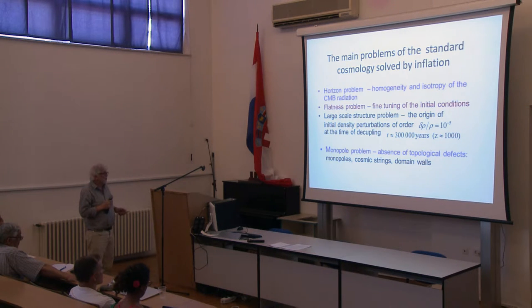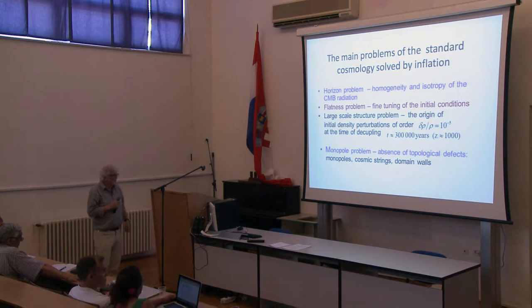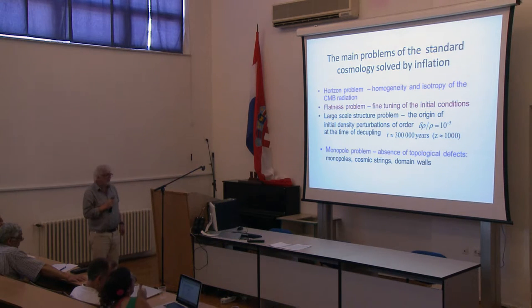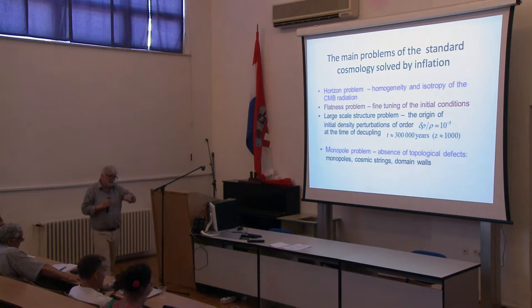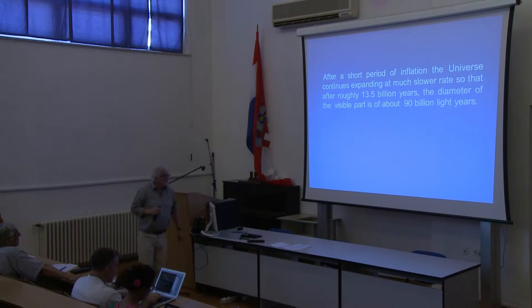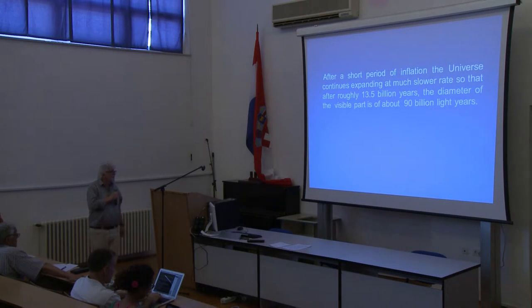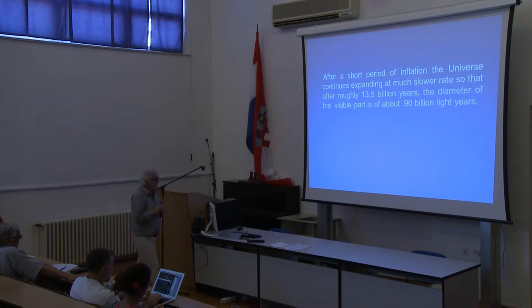Then there is the large-scale structure problem — the origin of initial density perturbations which caused the structure we see today. There is also the monopole problem: today we do not observe so-called topological defects like monopoles, cosmic strings, and domain walls. Domain walls separate two phases of matter; the edge of a domain wall is a cosmic string, and the endpoints of cosmic strings are monopoles. After this short period of rapid expansion, we have a much slower expansion, so that after roughly 13.5 billion years, the diameter of the visible part extends to about 19 billion light years.